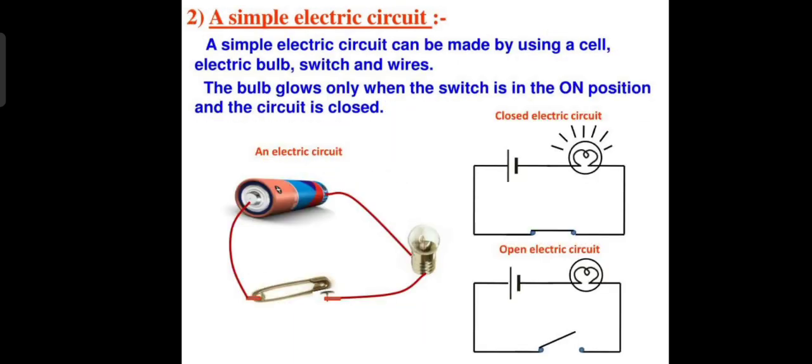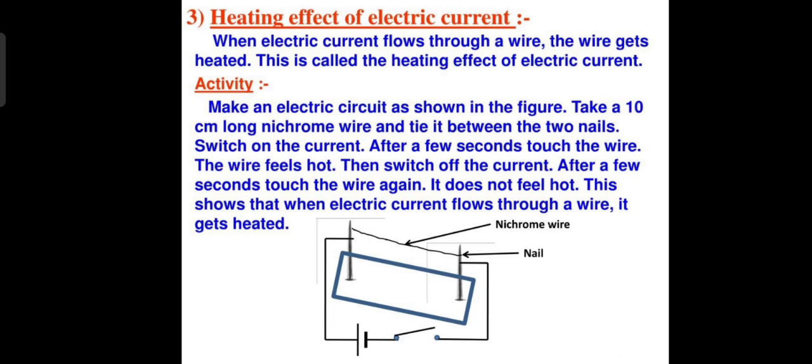In an electric current, when it passes through the wire, there are some effects of the electric current. Can any student tell me what are different effects of electric current? When there is an electric current, we feel three types of electric effects: one is the heating effect, second is the magnetic effect, and third is the chemical effect. Now, first is the heating effect of electric current, which means heat.